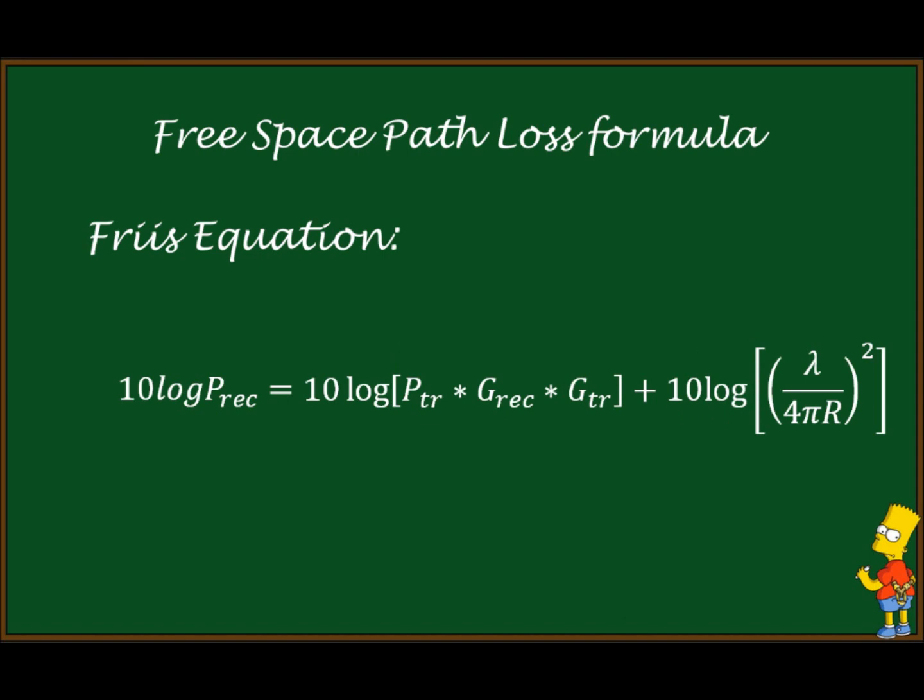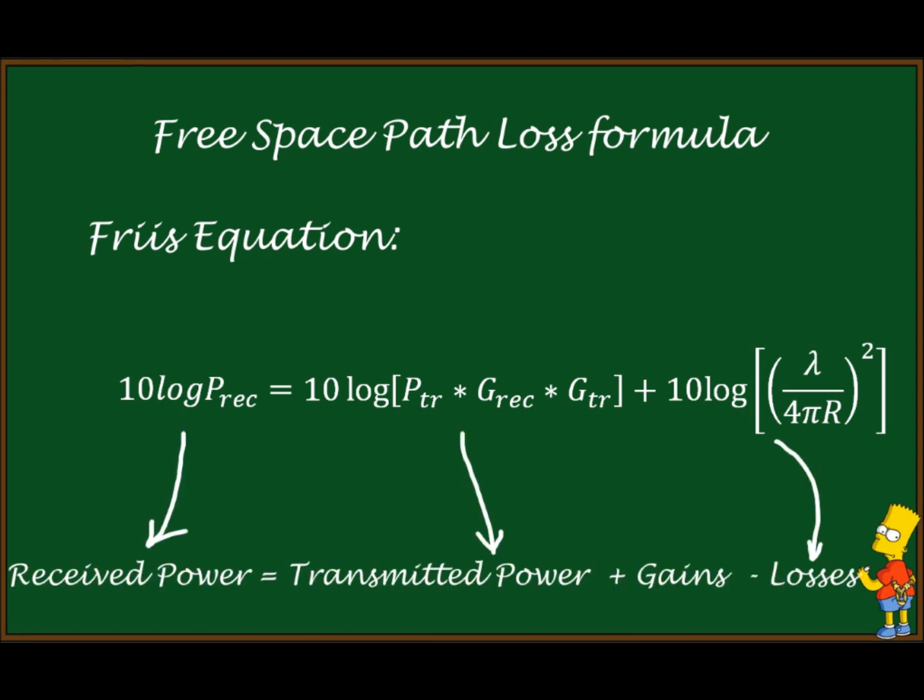Now by logarithmic rules I can split it like this, and I get two main parts. The first part gives me total power containing transmit power and gains of antennas.